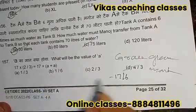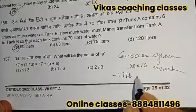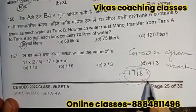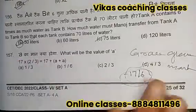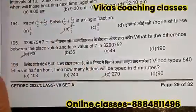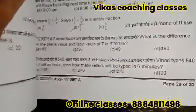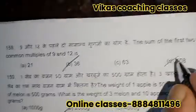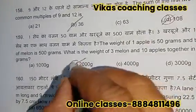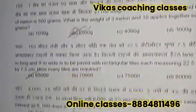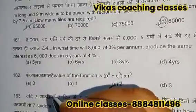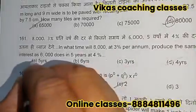Question 157: everyone will get grace marks because no answer in the options is correct. The accurate answer is minus 17 by 6. So moving on: 158 — option D is the correct answer. 159 — option B is the correct answer. 160 — option D is the correct answer. 161 — option A is the correct answer.